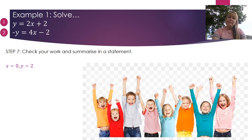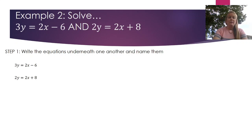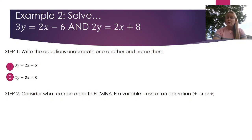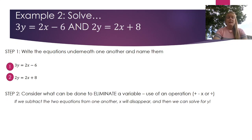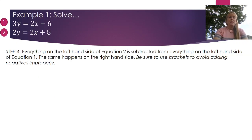In example 2, we've got 3y = 2x - 6 and 2y = 2x + 8. Stack them on top of each other and name them equation 1 and equation 2. Looking at these, I can eliminate 2x if I subtract one equation from the other. It's important to choose wisely — I'll do equation 1 minus equation 2 so I don't end up with a negative y, keeping things simpler. I stack them and subtract: everything on the left is subtracted from the left, and everything on the right. I'll use brackets for the second equation.